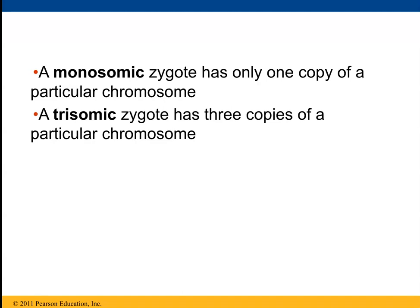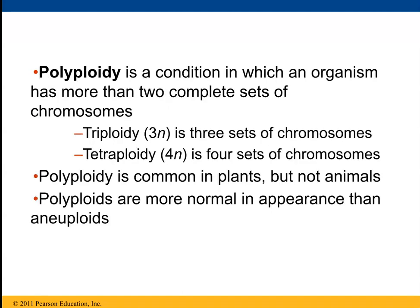Trisomy 21 is Down syndrome, trisomy 13 is Patau syndrome, trisomy 18 is Edwards syndrome, and you could also be trisomy at the sex chromosomes.